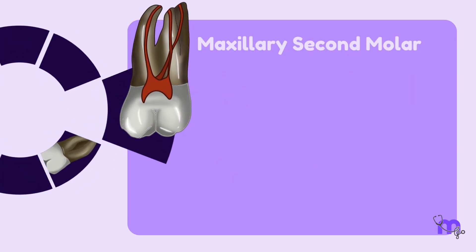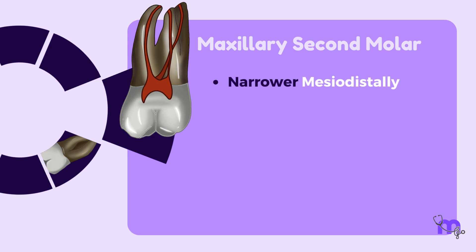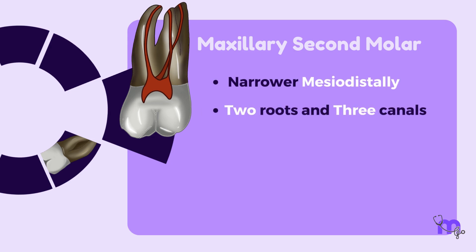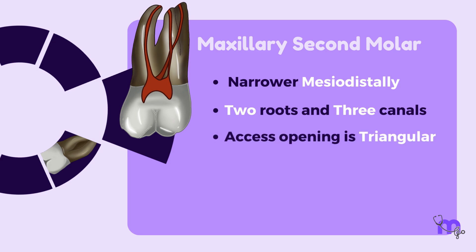Maxillary second molar: similar to the maxillary first molar, but a little narrower mesiodistally; two roots close to each other and three canals; access opening is triangular.